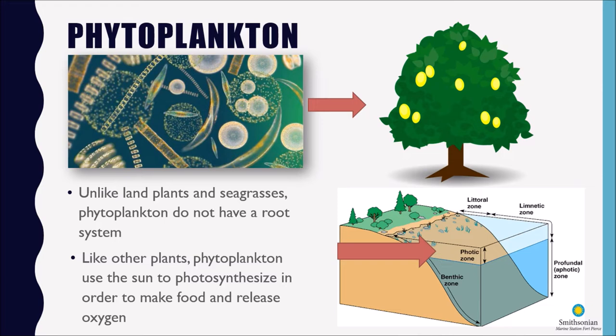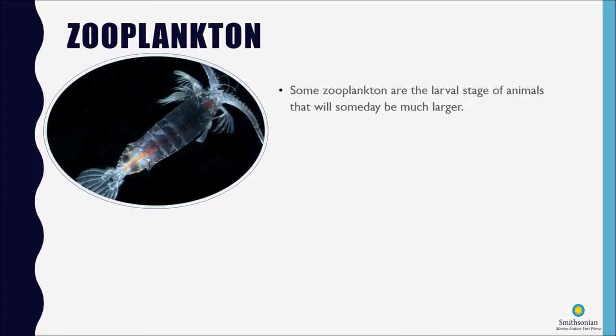So they need the sun's rays on the surface of the water in order to make food and to release oxygen. Now with zooplankton, some of these zooplankton are larval stages of animals that are someday going to be much larger, and most marine life actually spends part of its larval stage in the plankton.